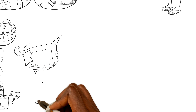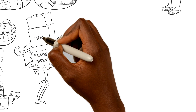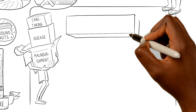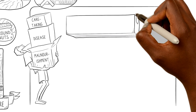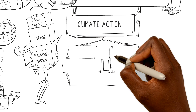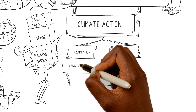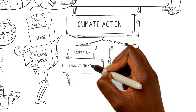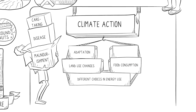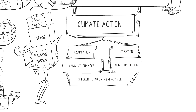For people who are weakened by malnourishment and disease, or who are busy taking care of ill community members, it is hard to take climate action, to invest in strategies to adapt to climate change, or make different choices in land use, energy use, and food consumption or livelihoods to mitigate climate change.